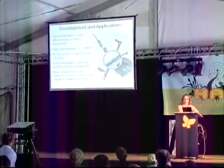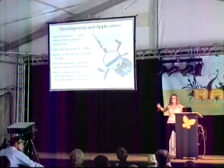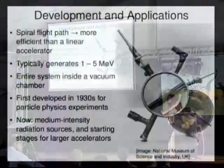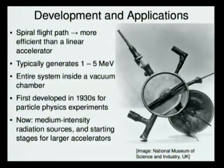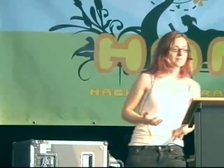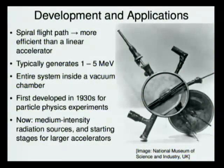The spiral flight path is important because it means the cyclotron is more efficient than a linear accelerator. Imagine you have a linear accelerator — some protons at one end, voltage applied — the protons are accelerated across this gap just once. So you need a very high voltage gap, or a long distance, or both, to get highly accelerated particles. But in the cyclotron, it's a spiral path, so the particles encounter the same accelerating electric field many times.